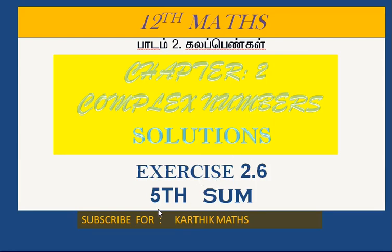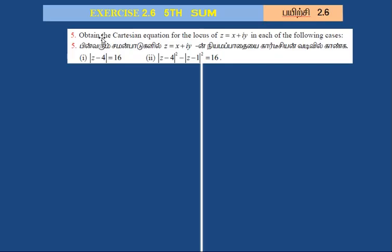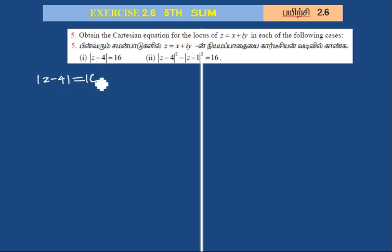12th standard complex numbers, problem 2.6. Obtain the Cartesian equation for the locus of z equal to x plus iy in each of the following cases. Substituting z equal to x plus iy, for the locus where z minus 4 equals 16.